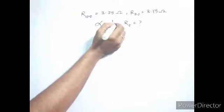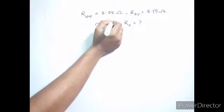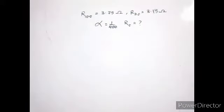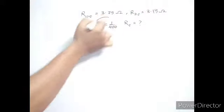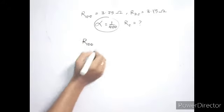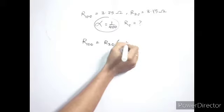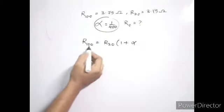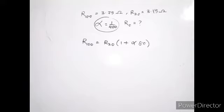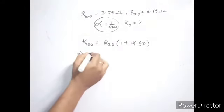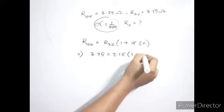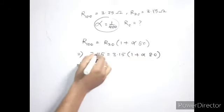The alpha we obtained is 1 by 400 degrees Celsius inverse. One might think of using R at 20 as the initial value instead. Let's check if that gives the same alpha. Using R at 100 equals R at 20 times 1 plus alpha times the temperature difference of 80, and substituting 3.75 and 3.15, we get 25 over 21 on simplification.